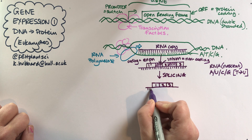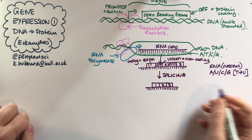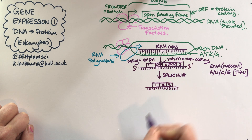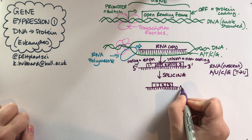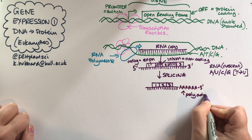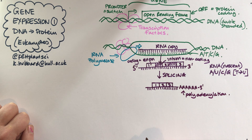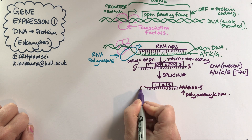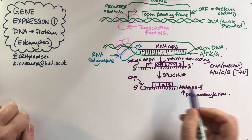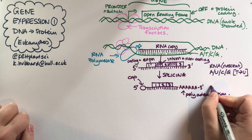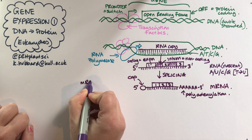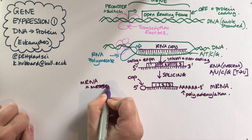The two ends of the RNA also get processed. We call the two ends the five prime end and the three prime end. At the three prime end, a whole load of A residues are added — a process called polyadenylation — giving us what's called the poly A tail. At the five prime end, a structure called a cap gets added. So both ends of the RNA molecule are now protected, and we can call this a mature messenger RNA, or mRNA.